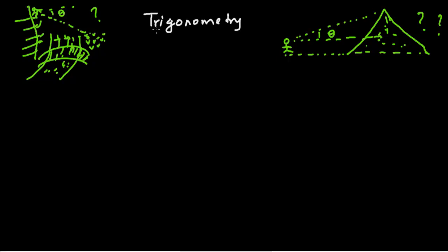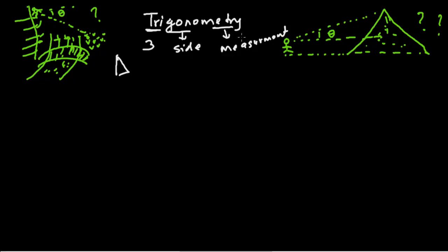Trigonometry will give us all the answers. The word 'trigonometry' breaks down as: 'tri' means three, 'gon' means side, and 'metri' means measurement. The geometrical object that has three sides is of course a triangle. So trigonometry is related to the three sides and three angles of a triangle — specifically their ratios.